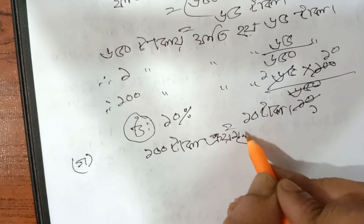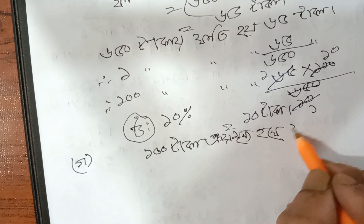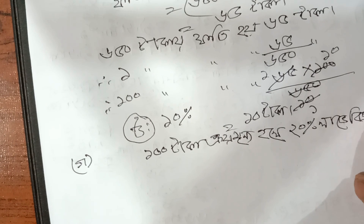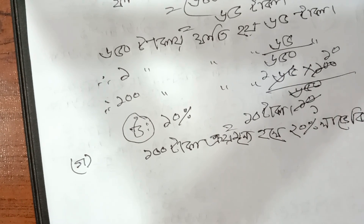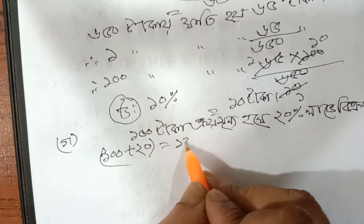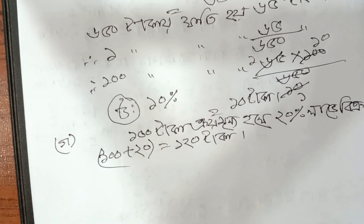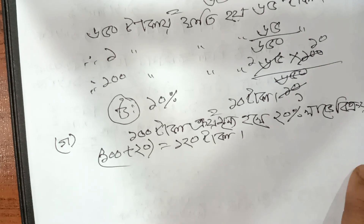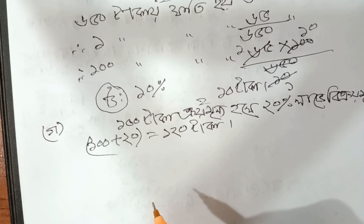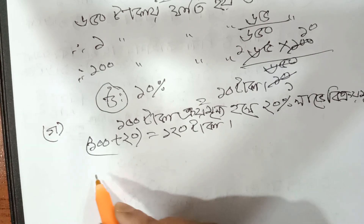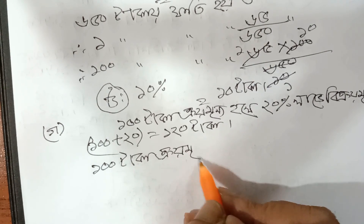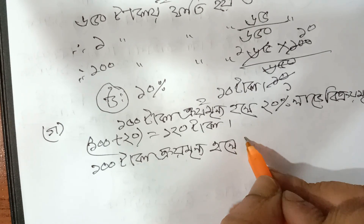ક્રાય મૂલો હલે — 100 ટાકા — ક્રાય મૂલો હલે — 20% લાભ — 2 ક્રાય મૂલો. લાભ હલે — 100 સાથે — આર ખોતી હુલે — 100 થેકે — 20 — તા — જોગ 20 — ઓ. 100 + 20 = 120 ટાકા — એ — ક્રાય મૂળ — બી ક્રાય.